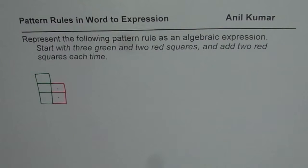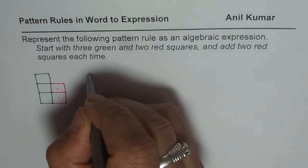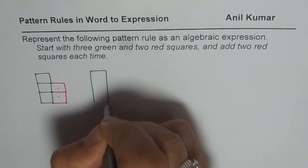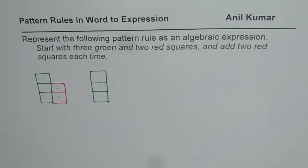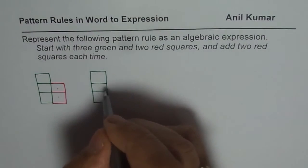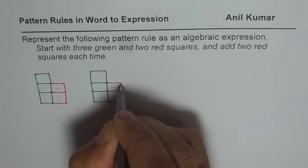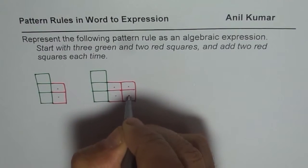The next time, what do you do? Add 2 red squares each time. So this is the first pattern. In the next pattern we'll have the original value, which is 3 green and 2 red, and we are going to add these 2 once again. So that is what is changing.